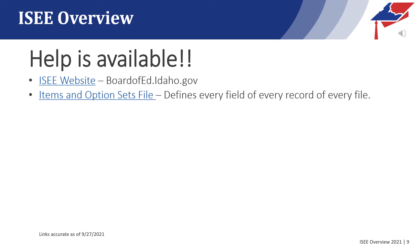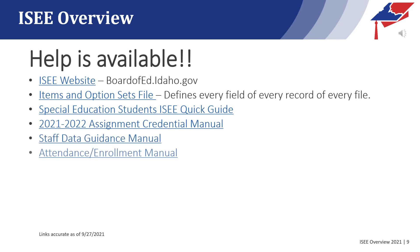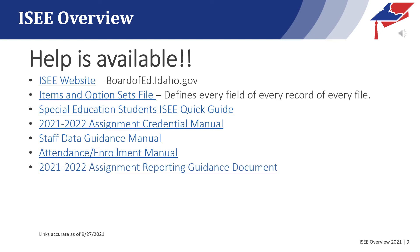There are a number of manuals on the website put together by the divisions of the State Department of Education that assist with IC reporting. These include an updated special education guide, assignment credential manual, staff data guidance manual, attendance and enrollment manual, and a special assignment reporting guidance document. Additionally, the CTE, or Career and Technical Education Department, has put together an assignment credential manual specific for those CTE assignments and endorsements.